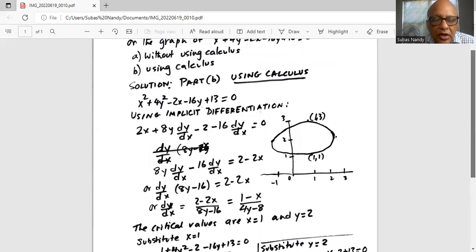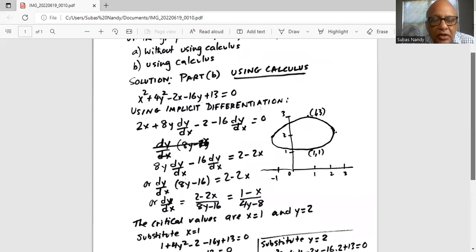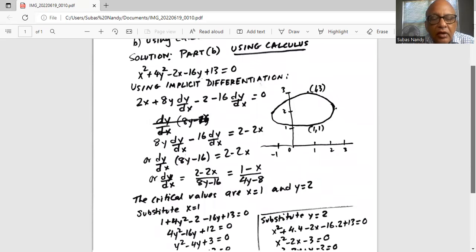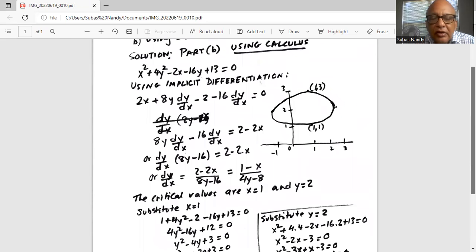Now we divide by 8y - 16 on both sides. So on the left side of the equal sign, we get dy/dx = (2 - 2x)/(8y - 16). We take 2 as a common factor out of the numerator, which becomes 2(1 - x), and the denominator becomes 2(4y - 8). We cancel the common factor 2 from the numerator and denominator, and we get dy/dx = (1 - x)/(4y - 8).